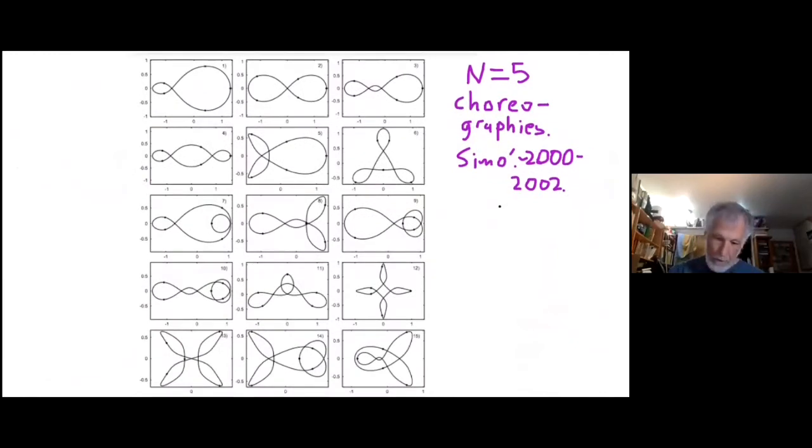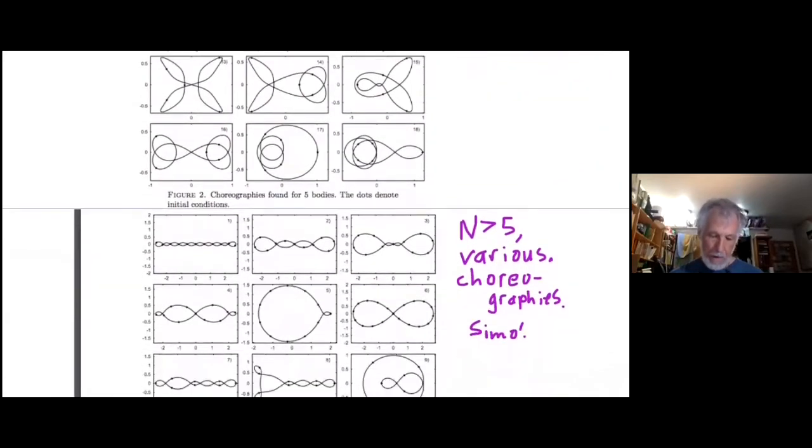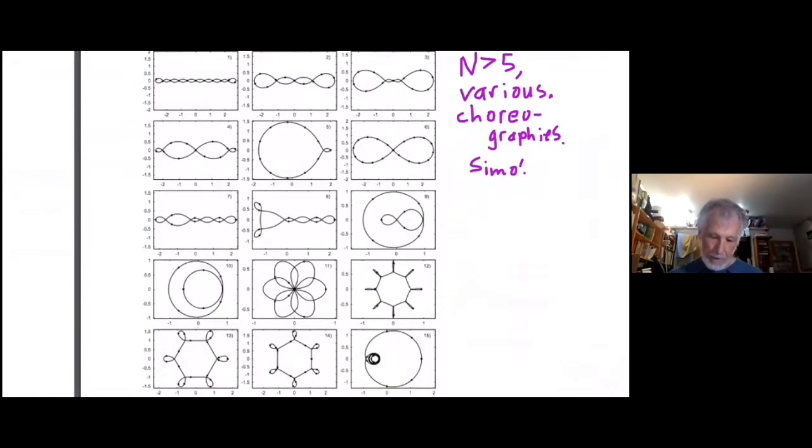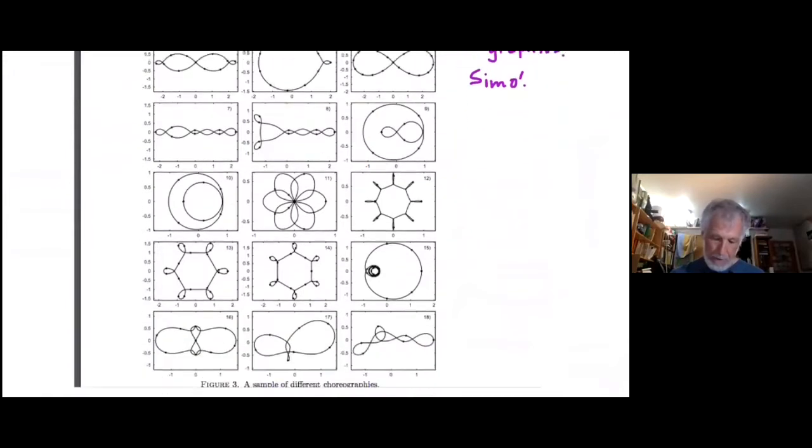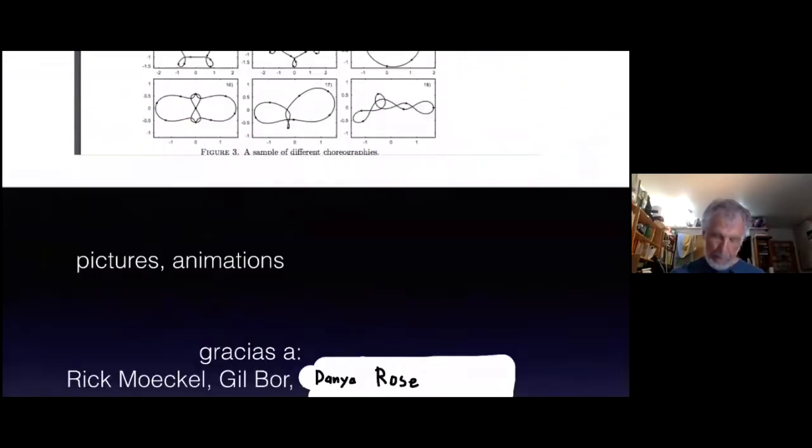Here's a few N bigger than three orbits. These are choreographies that came out of the figure eight. This is from a paper of Simo. This is for five bodies. In each of these solutions, the five bodies chase each other around some planar curve. Most of these are unstable dynamically. Here's some for N greater than five. This particular family exists for any odd N. We call it the chain family. There's a whole industry around these choreographies. They tend to be unstable. That's the end of the tour.